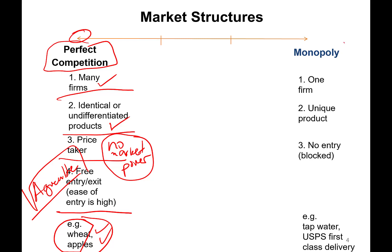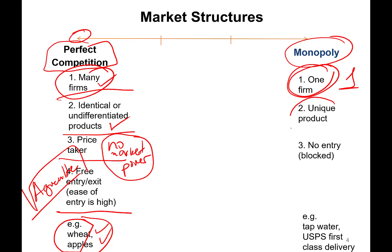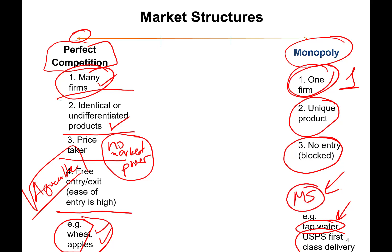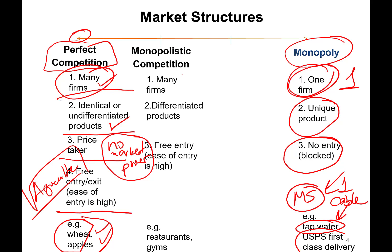On the other extreme we have monopoly — just one firm producing a unique product without close substitutes, and entry is blocked. Examples include tap water provided by a city, or USPS first-class delivery. For instance, in Hattiesburg, Mississippi where I lived, there was only one cable provider — that is a monopoly for that town.